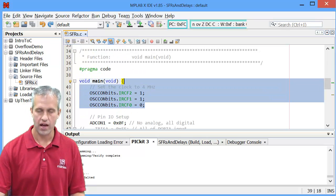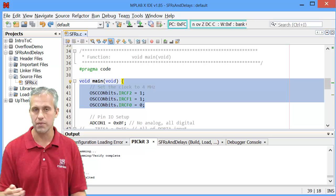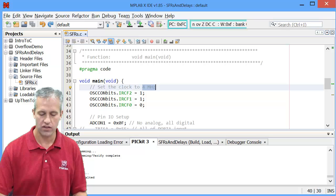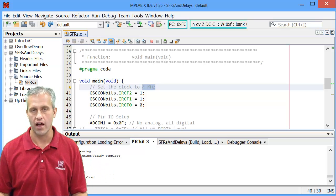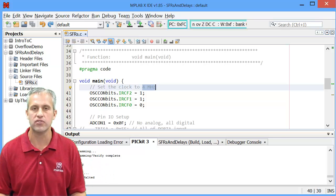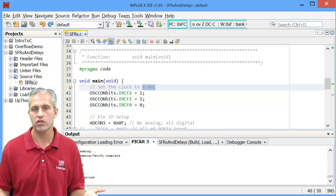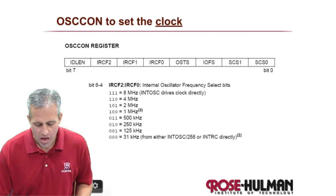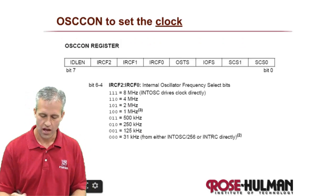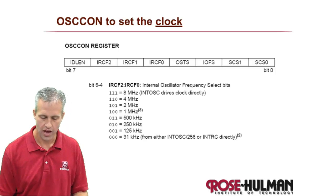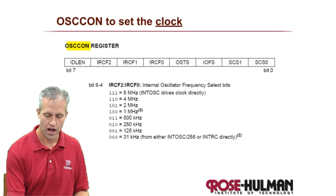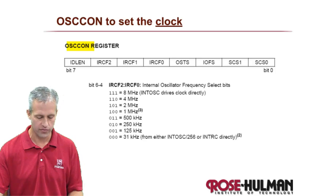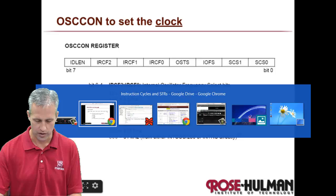The internal one is set by a special function register — 3 bits in a special function register set the speed. By default in this class, we're going to use 4 MHz a lot. It's just a really convenient speed for doing timing calculations, so we're going to use 4 MHz quite a bit. The way it's set is by looking at a register, OSCCON — no surprise. This special function register, if you wanted to see it, don't forget about courseware.